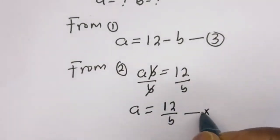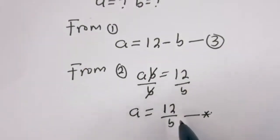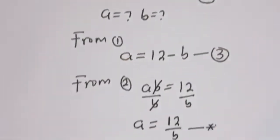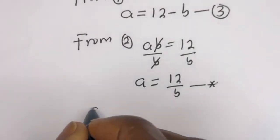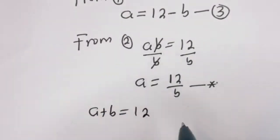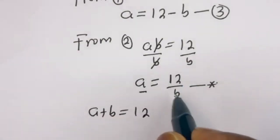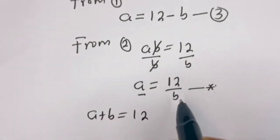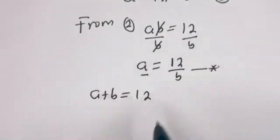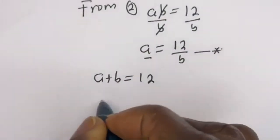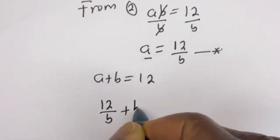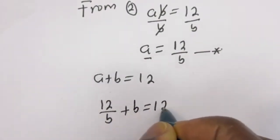Let's call this equation star. Let's substitute this equation into equation 1, that is a plus b equals 12, when a is equal to 12 divided by b. You may also use equation 3 to substitute for a, but we'll use this. Then we have 12 divided by b, plus b, is equal to 12.